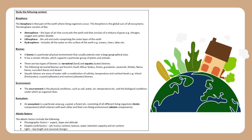Biosphere: The biosphere is that part of the earth where living organisms occur. It is the global sum of all ecosystems. The biosphere consists of the atmosphere — the layer of air surrounding the earth containing gases such as nitrogen, oxygen, and carbon dioxide; the lithosphere — the soil and rocks comprising the outer layer of the earth; and the hydrosphere — all the water on the surface of the earth, including oceans, rivers, lakes, etc.